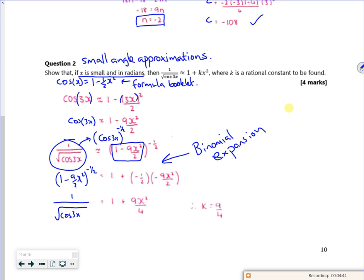So my 1 minus 9 over 2 x squared to the power minus a half is there, which is really the same as my 1 over the square root of cos 3x. And I've got the answer that I want there. There's quite a lot to follow there, but it's nice. So I'm using small angle approximations and then I change my cos into the small angle approximation and do binomial with it. Can't argue with that.